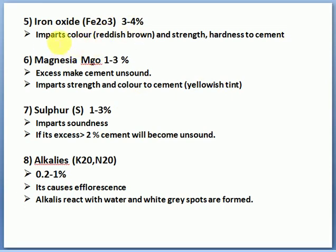Iron oxide (Fe2O3), 3 to 4% — it provides strength and hardness to the cement. Next, magnesia (MgO), 1 to 3%. Excess magnesia makes cement unsound. Unsoundness means volume expansion — if magnesium content is high, the volume will expand, causing cracks wherever cement is used, and there is a risk of structural failure.